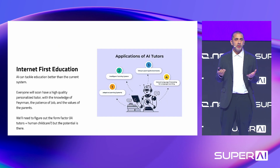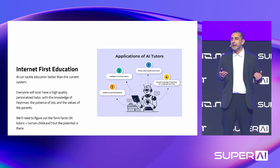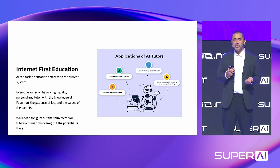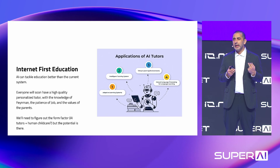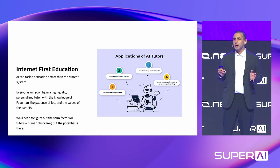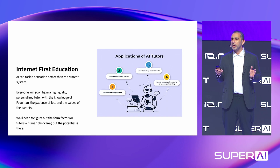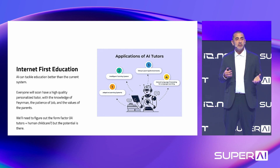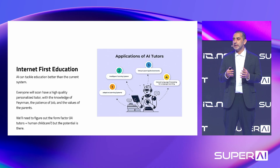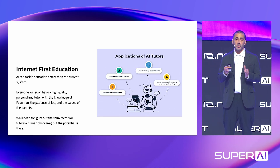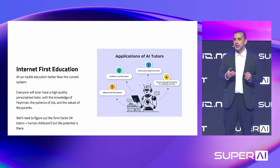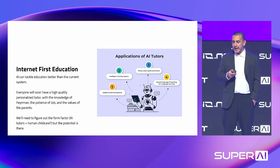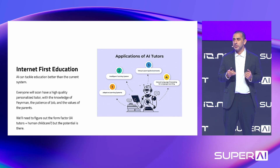For a fourth example — an obvious one — internet-first education. We saw the learning drop in Western education, but we might have a learning rise. We're getting very close to real-time video synthesis, audio synthesis, and language synthesis, where an AI tutor — infinitely patient, with the knowledge of Feynman and the values of your parents — can teach any kid anything in any language at any time, essentially almost for free. You might need a babysitter to make sure children stay on task, but that's radically more scalable than K through 12. The potential is really remarkable.